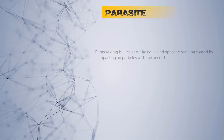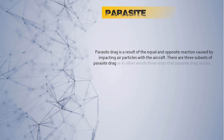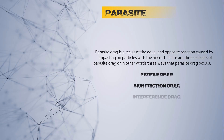Parasite drag is a result of the equal and opposite reaction caused by impacting air particles with the aircraft. There are three subsets of parasite drag — three ways that parasite drag occurs: profile drag, skin friction drag, and interference drag.